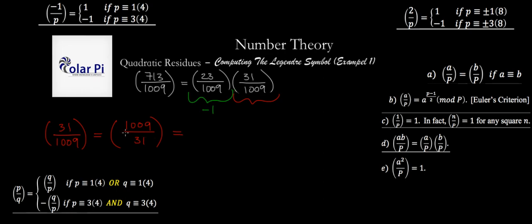And next, we reduce 1009 mod 31. And it's going to reduce to 17. So we've got 17 over 31. This is congruent to 1 mod 4. This is congruent to 3 mod 4. So we've got that this and this is the same as 31 over 17. Reduce 31 mod 17. And we're going to be able to write, what's 31 mod 17? 14. So 14 over 17.